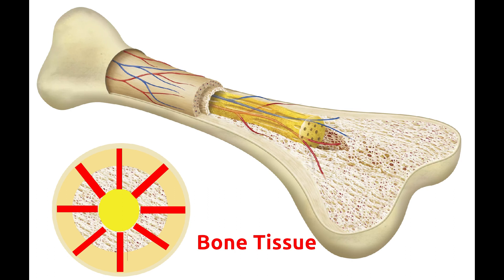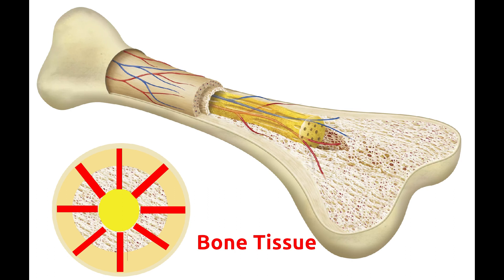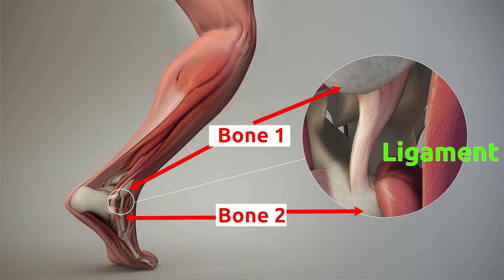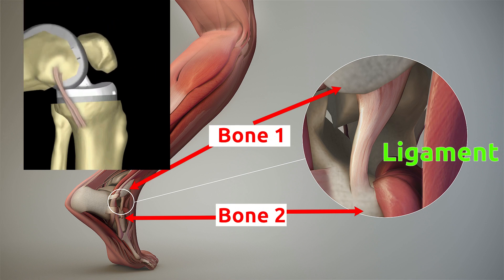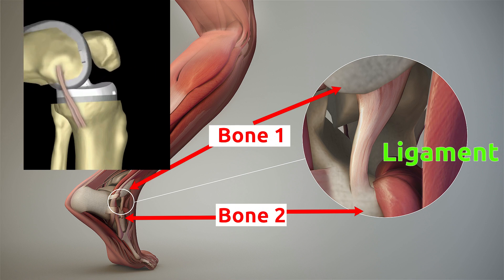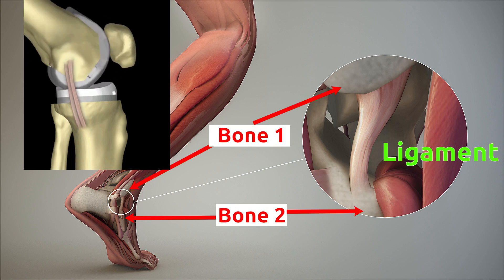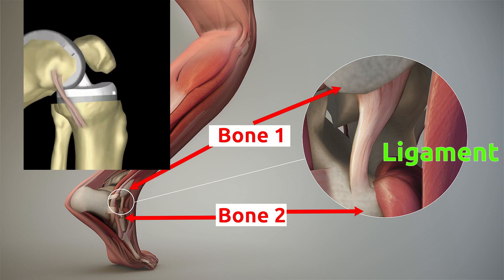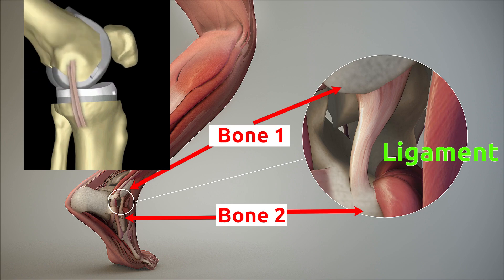Bone tissues contain minerals such as calcium and phosphorus. Our skeletal system is made of bone tissues, which provide structure and stability to the body. Ligaments are also considered bone tissues as they connect two bones together. Ligaments are elastic in nature and have less space between their cells compared to other supportive tissues.